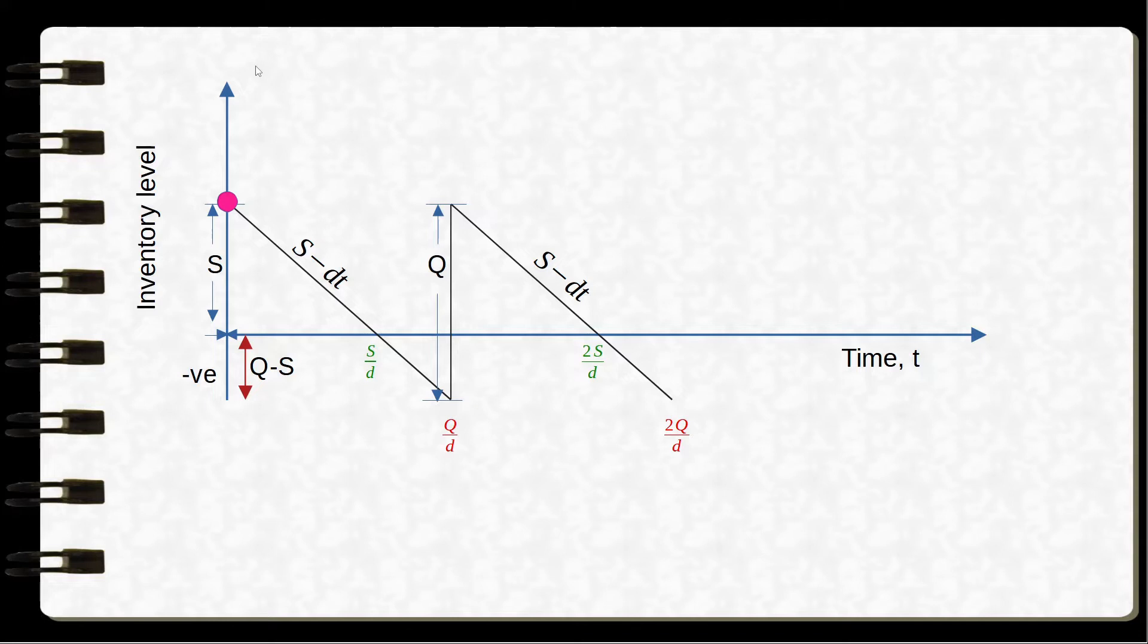To start with, we have S units. The units are withdrawn at a constant rate D. So the inventory level at any point is S minus DT. We come to the inventory level 0. That would require time S over D.